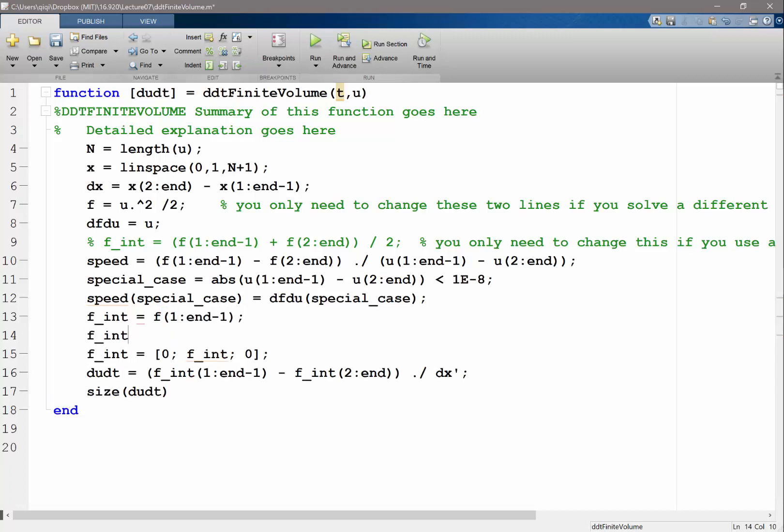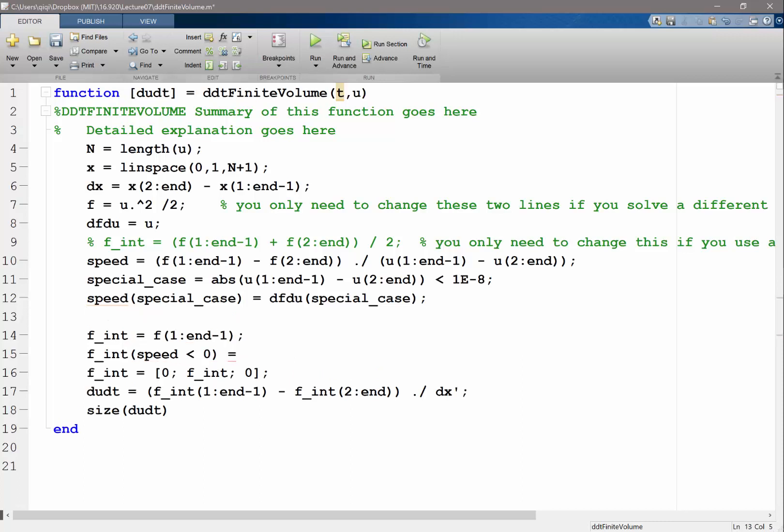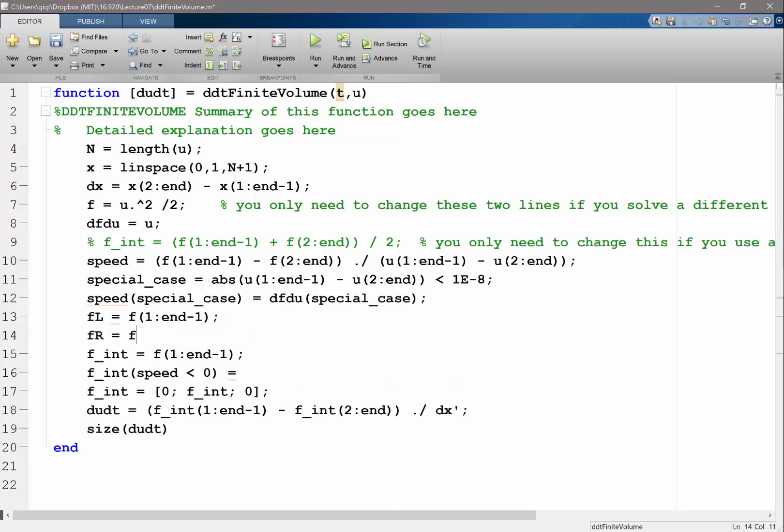And fint - the places where it's not proper to do this is for speed less than zero. Okay, let me do this differently. f_left is going to be this, right? f_right is going to be f2(n). So fint